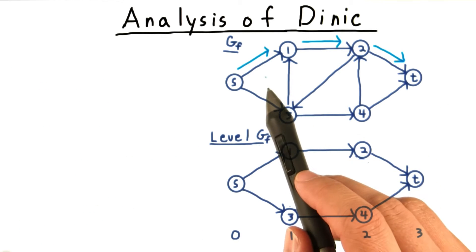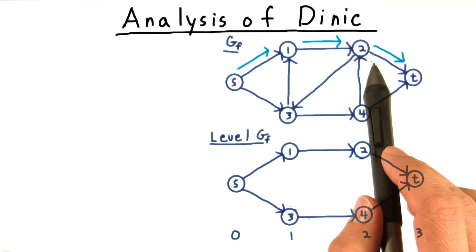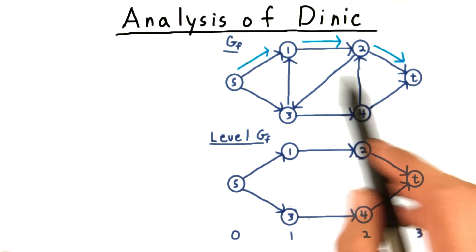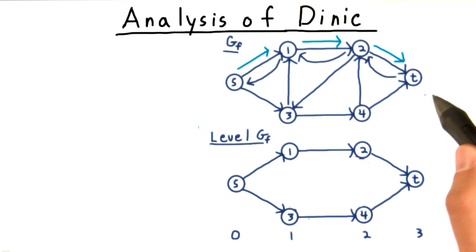As we argued before, when we augment a flow along a path, say along this one here, we introduce reverse edges into the residual graph. Note that these are always backwards edges in the level graph, and hence they aren't useful in building a path equal to or shorter than the previous shortest path.